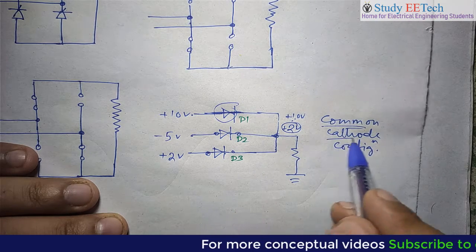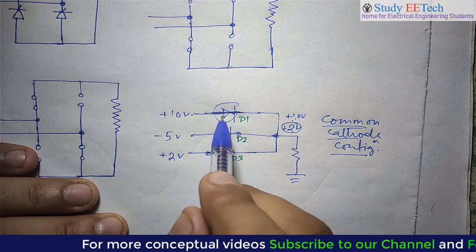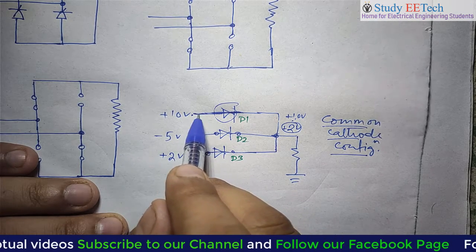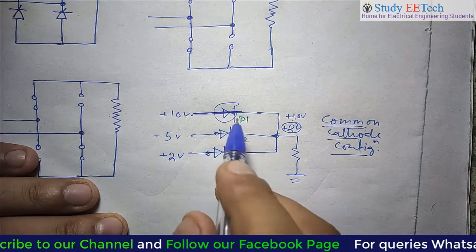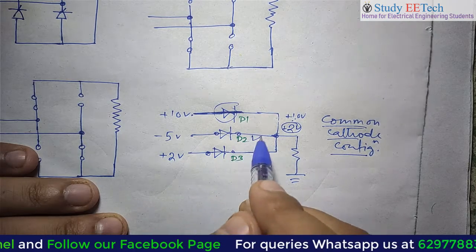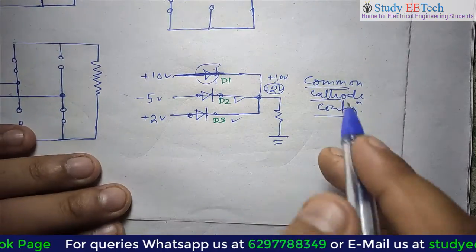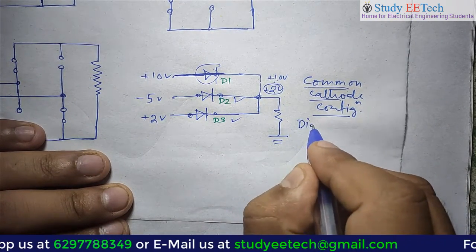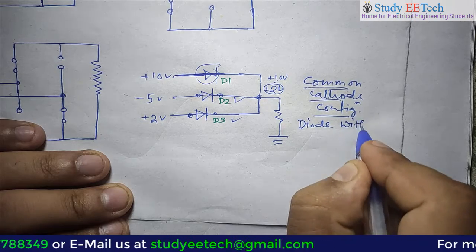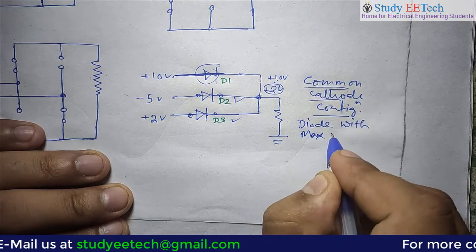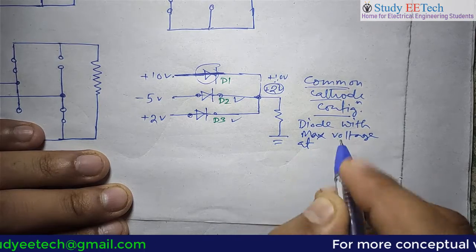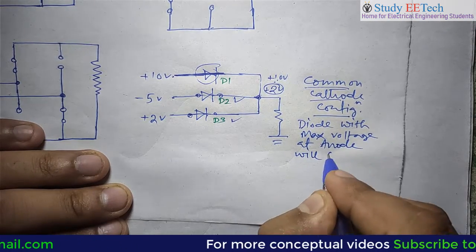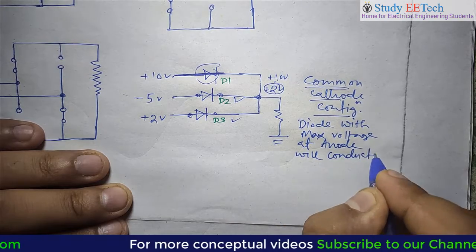In case of common cathode configuration, that diode will conduct which is having the highest voltage at its anode. This diode will be short circuit and will make other diodes reverse biased. Remember this rule: in case of common cathode configuration, the diode with maximum voltage at the anode will conduct.